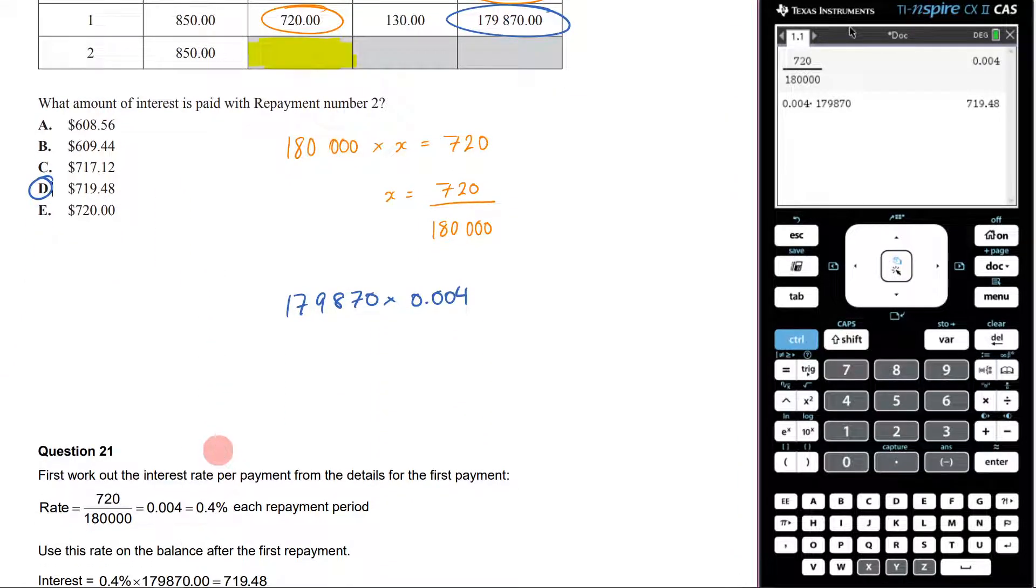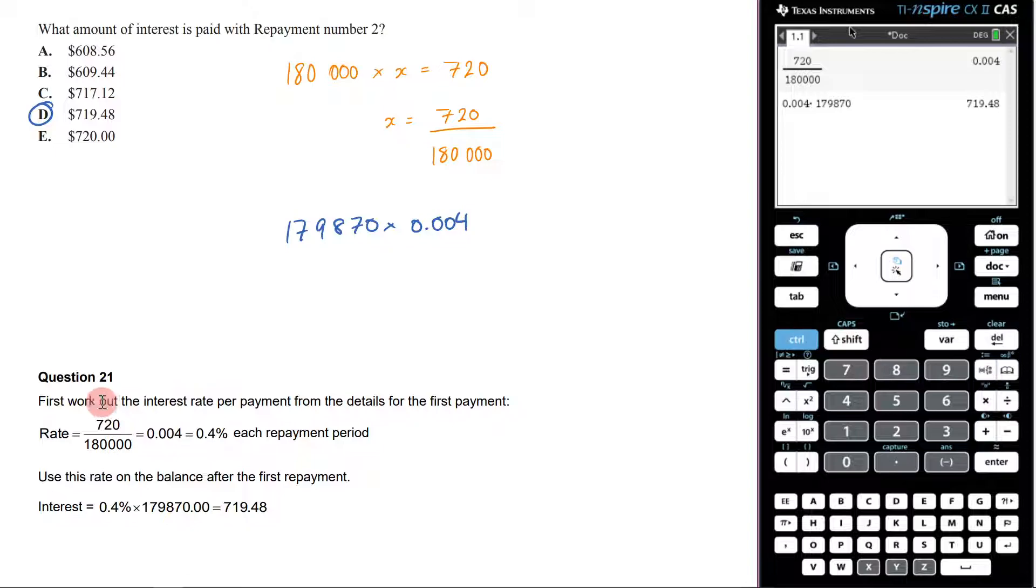Let's now look at our examiner's report here. It says, first work out the interest rate per payment for the details for the first payment. So the rate is 720 over that. So 0.004 or 0.4% each payment period, each repayment period.